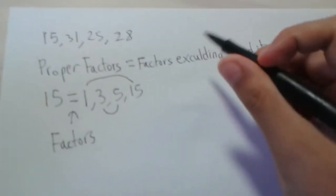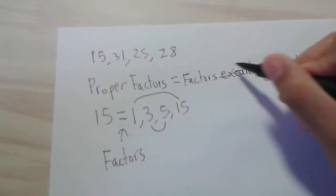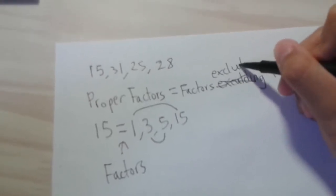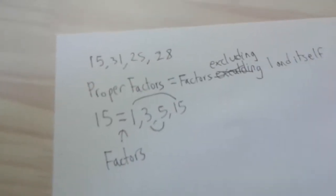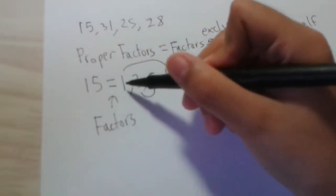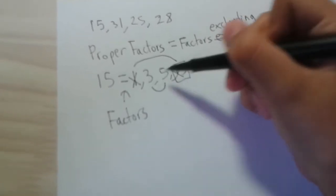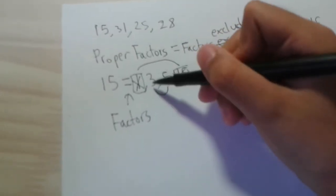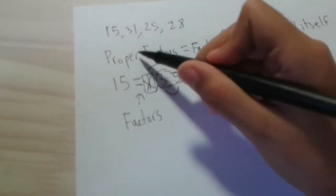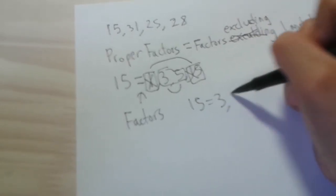But, as I said before, oh, this is spelled wrong, oops. Exclude, and I knew something was wrong. Yeah, that looks better, okay. So, if you were to find the proper factors of this, we would exclude this and this, because this is the number itself, and this is the number 1. So, it would be 3 and 5. So, 15, the proper factors would be 3 and 5.